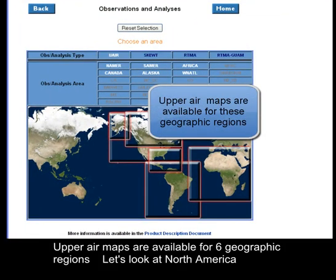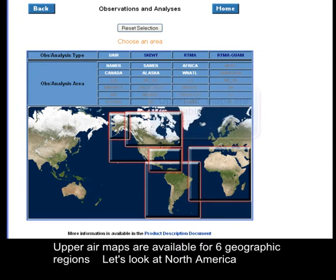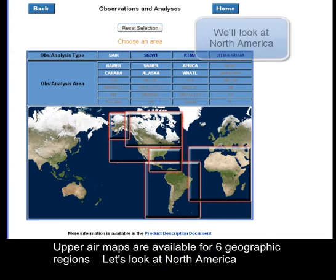Upper air maps are available for six geographic regions. Let's look at Earth America.